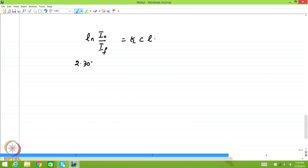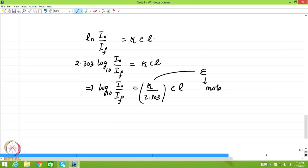is kappa times C times L. And ln is of course 2.303 times logarithm to the base 10 of I naught by I f, and that is equal to kappa times C L. And so you write logarithm to the base 10 of I naught by I f is equal to kappa by 2.303, which is again a constant times C L, and this is what is called the epsilon or the molar extinction coefficient.